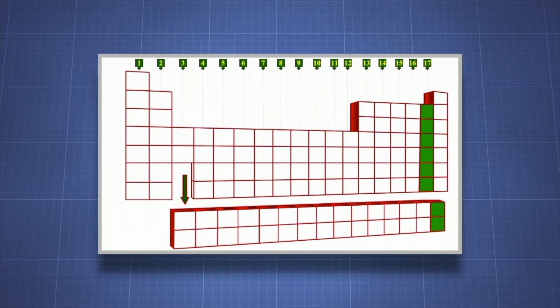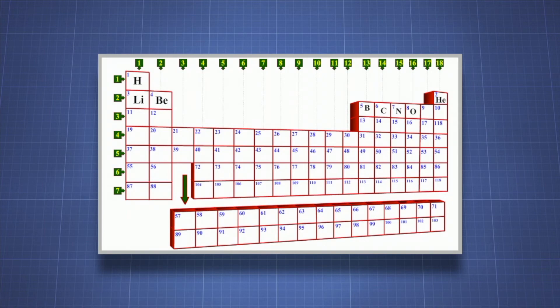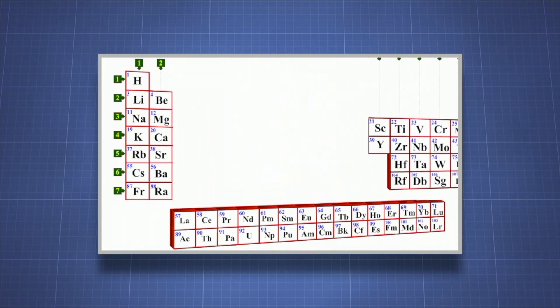Mendeleev's arrangement of the periodic table over a century ago allows us to understand an element's chemical, physical, and atomic properties simply by looking at its position on the periodic table.